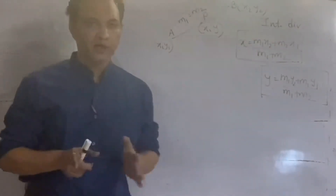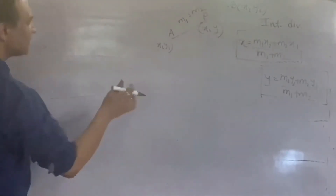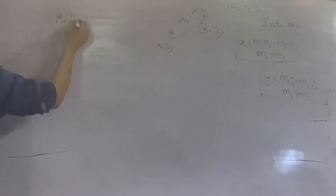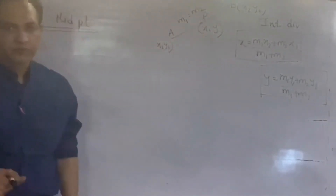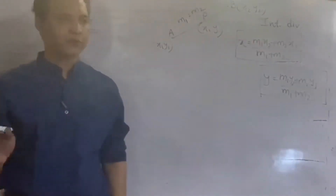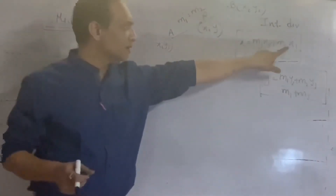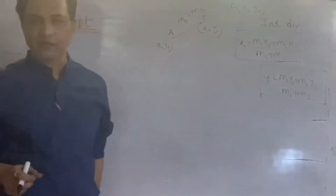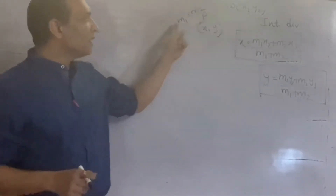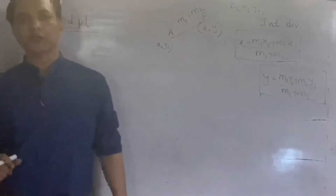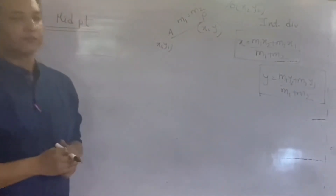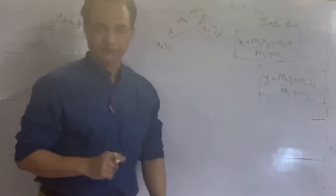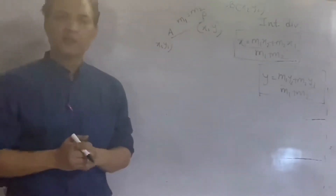अब इसी से Midpoint का formula निकाल सकते हैं। अभी अपनने पढ़ा कि point P, AB को M1:M2 में divide कर रहा था। यदि point P Midpoint है, मतलब दो equal parts में divide करता है, तभी हम उसको Midpoint बोलते हैं। तो Midpoint के case में ratio बराबर होगा — 1:1, 2:2, 3:3 — जो लेना हो। सबसे easy 1:1 रहता है।